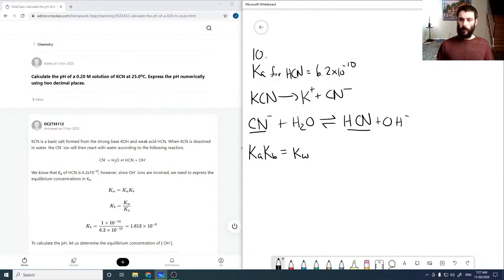Ka is the acid equilibrium constant and Kb is the conjugate base constant. So if we have our Ka for HCN, then Kb is KW over Ka.